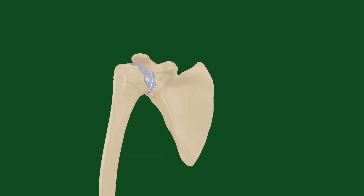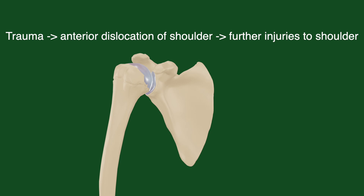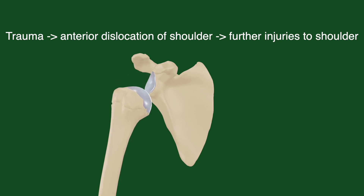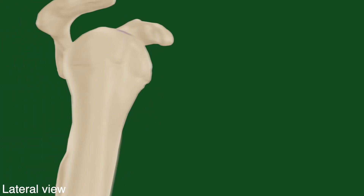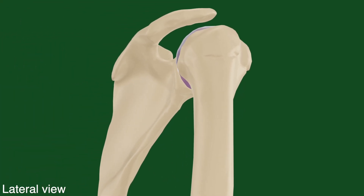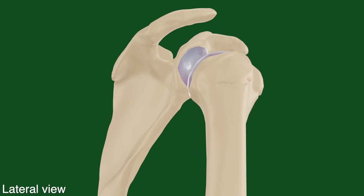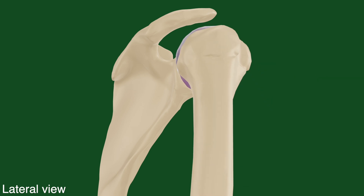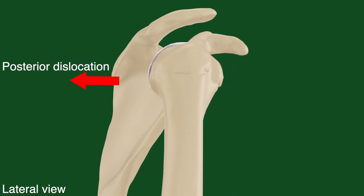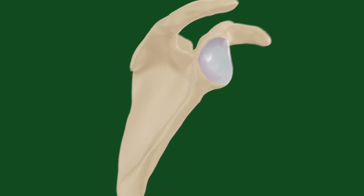Put simply, a traumatic anterior shoulder instability is trauma leading to the anterior dislocation of the humerus that can have associated pathologies, predisposing to a high recurrence of such dislocations and other consequences. Traumatic shoulder dislocations can take place anteriorly or posteriorly, with the anterior dislocation being much more common than the posterior dislocation.